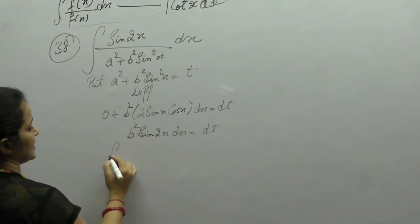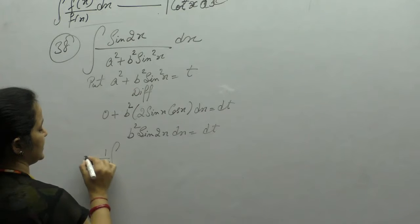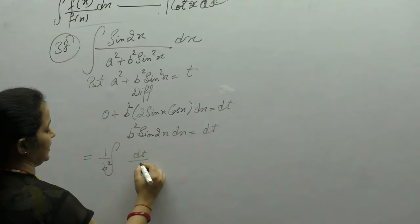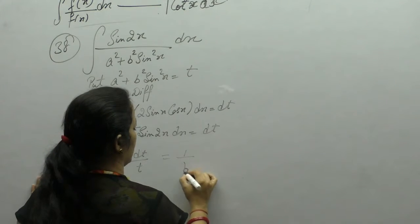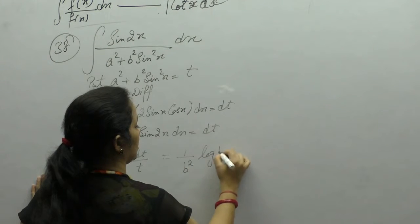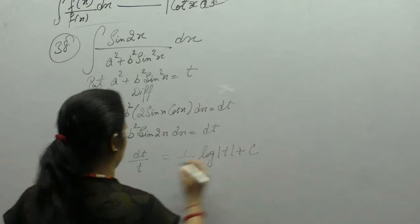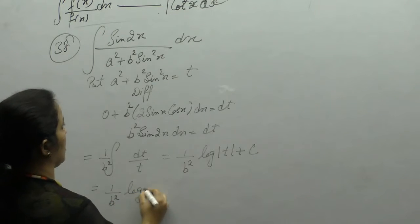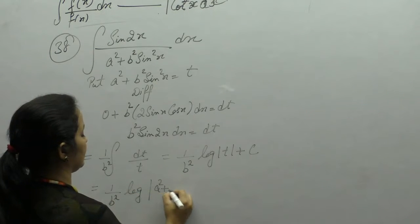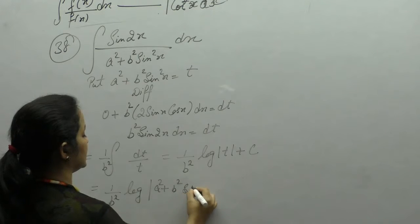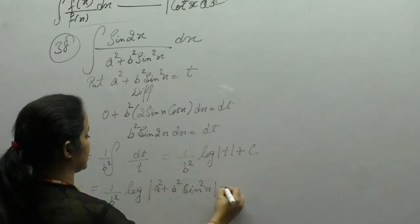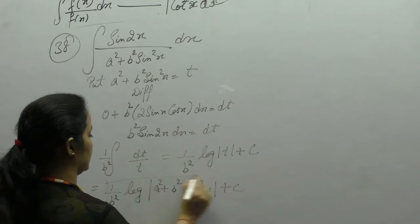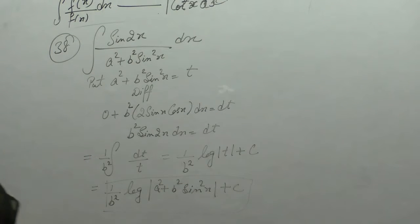dx equals dt, so sin 2x gives 1 upon b² · dt upon t, which is 1 upon b² · log of t plus c. Therefore the answer is 1 upon b² · log(a² + b² sin²x) plus c.